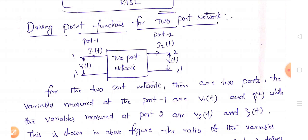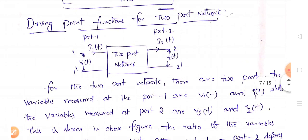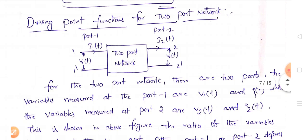The driving point function is the ratio of either voltage to current or current to voltage. In the two-port network you have two ports: the first port labeled one–one-dash, and the second port labeled two–two-dash. For the first port you have voltage V1(t) and current I1(t), and for the second port you have voltage V2(t) and current I2(t).